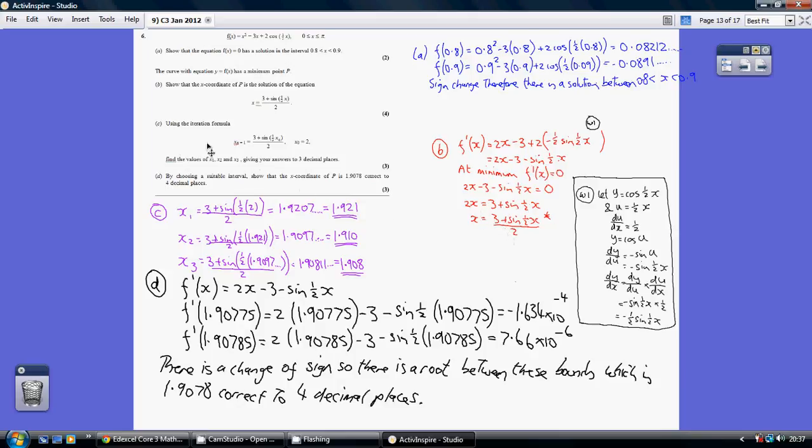Now for part c, using the iteration formula. So for x₁, we just substitute x₀ in, x₀ being 2, so we substitute 2 in, giving us this. Now for x₂, we just substitute our x₁ result into the iteration formula, giving us this. And for x₃, we substitute our x₂ result into the formula, giving us this.